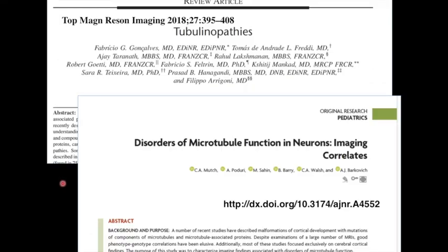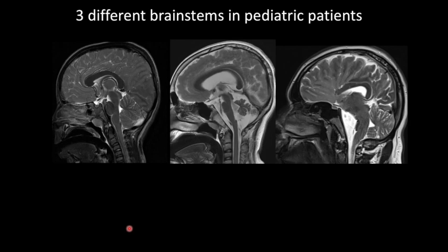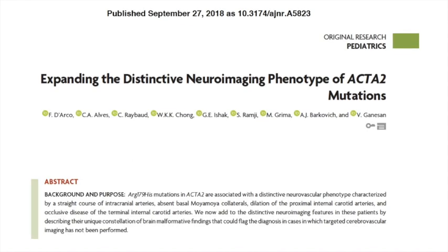Welcome back to 5-Minutes Neuroimaging with Bijoy Thomas. Last time we discussed tubulinopathies and promised to cover microtubular associated protein abnormalities. We also mentioned ACTA2 mutations and parenchymal changes. To speak more about this, we have an international expert, Dr. Felice Diaco, a consultant pediatric neuroradiologist at Great Ormond Street Hospital in the UK, and author of a recent article in the American Journal of Neuroradiology about parenchymal changes in ACTA2 mutations.